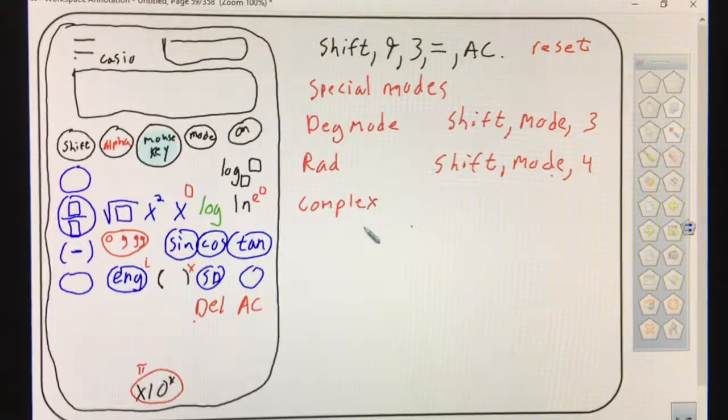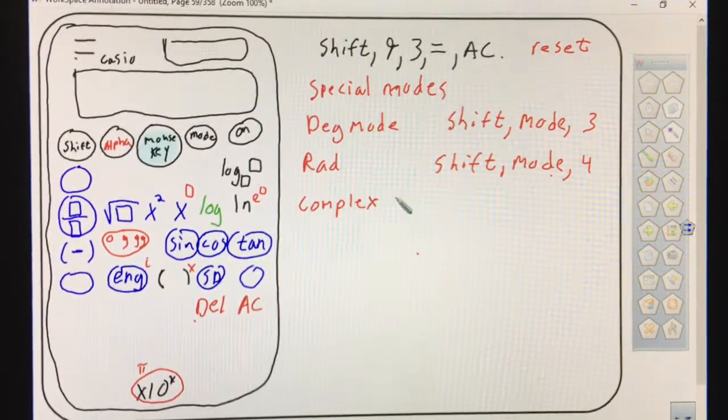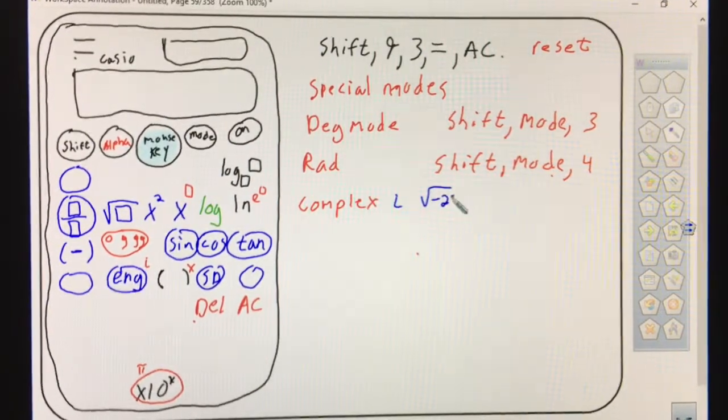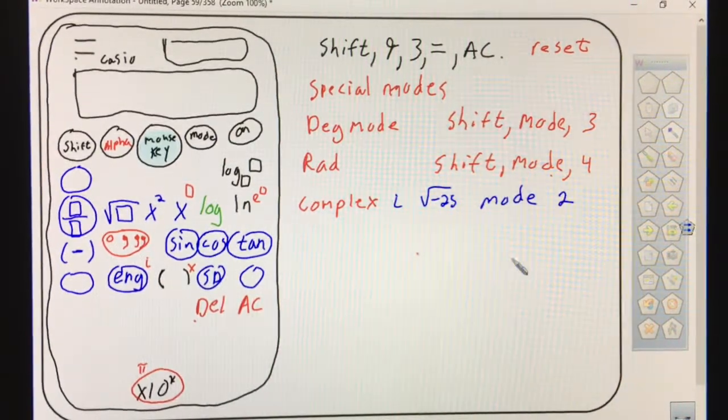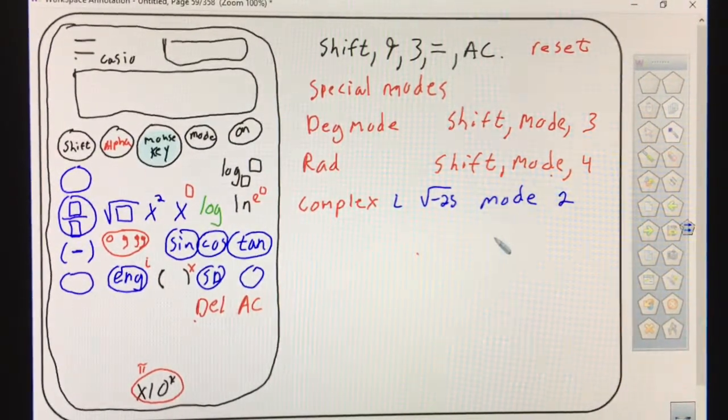Complex mode - that's to deal with i or square roots of negative. To get i or take the square root of a negative, you're just going to hit mode two. That's it. You'll start working in complex mode.